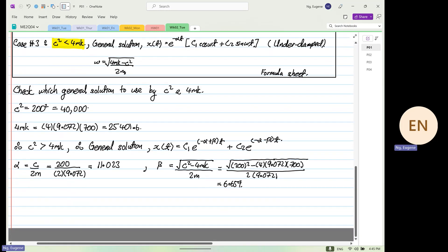So once you get all this index, x in terms of time, we know that c1 exponential of minus 11.023 plus 6.659, and then plus c2 exponential of minus 11.023 minus 6.659.